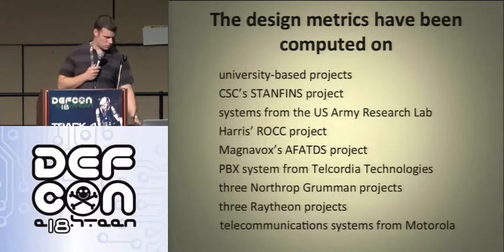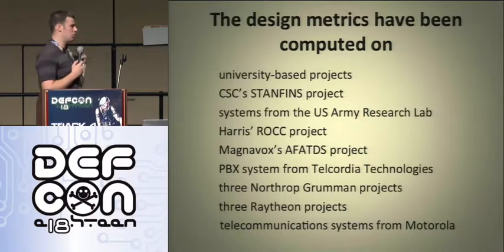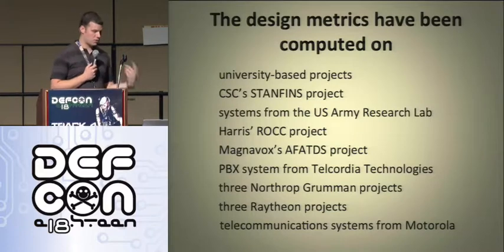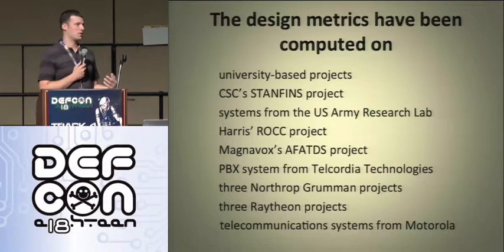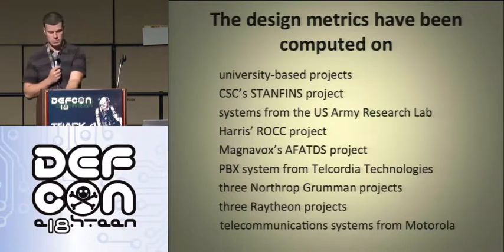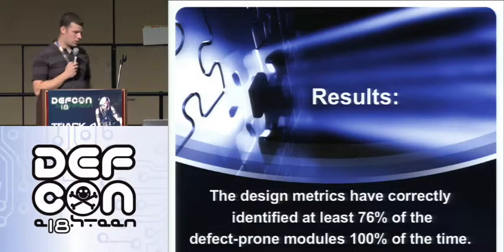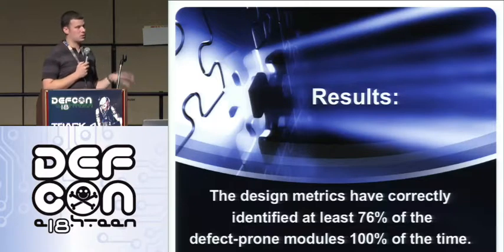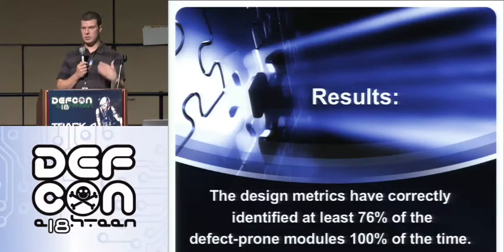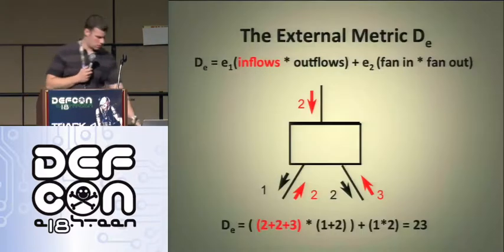We've computed metrics on university-based projects, Computer Science Corporation, systems from Army Research Labs, Harris's Rock Project, Magnavox PBX System, Northrop Grumman, and open source projects. On the results for the actual reliability metrics, they have correctly identified — in the worst-case scenario — 76% of the defect-prone modules. That's the worst time they ran it. It's almost always higher than that, generally closer to 80% or 90%.